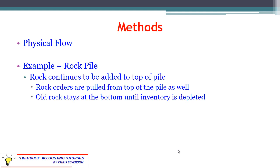Now let's talk about a rock pile. At a rock quarry, they generally pile rock up and the newer stuff keeps getting added to the top. When you go to buy rock, you're not going to dig to the bottom of the pile to get the oldest rock — that would be very difficult. Instead, you pull from the top, which is the newest rock. The older stuff continues to get buried as more is added. The good thing about rock is it doesn't perish, so it really doesn't matter whether you have new or old rock. Once you deplete the inventory, the old rock would finally be exposed.